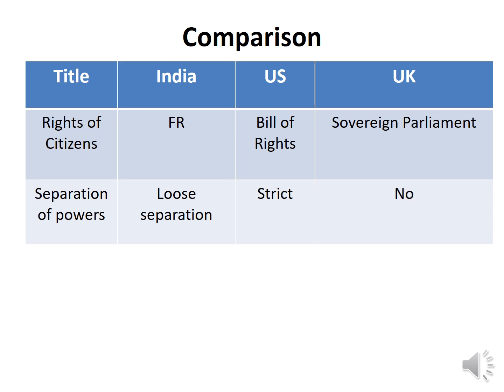In the US there is a strict separation of powers — the executive, legislature, and judiciary are separate. In the UK there is no formal separation of powers because nothing is formally written. The entire system runs on parliamentary conventions, statutes, laws, and historical documents, so there is no strict separation of powers as Parliament is sovereign.